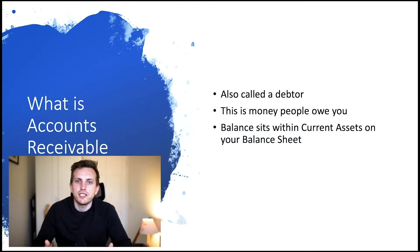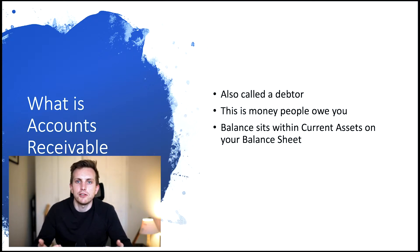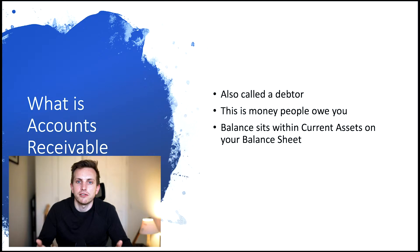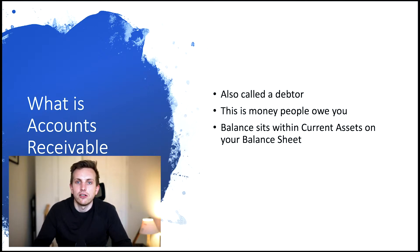What is accounts receivable? Accounts receivable can also be called a debtor. This is effectively money that is owed to you. A sale doesn't always have to be transacted for in cash — it can be transacted for with credit. So someone could owe you money for maybe 30 days or 60 days. You have to recognise the other side of this transaction: you recognise revenue, but you also have to recognise it on your balance sheet as someone owes you money because they have yet to pay you. This sits on the current asset section of your balance sheet.